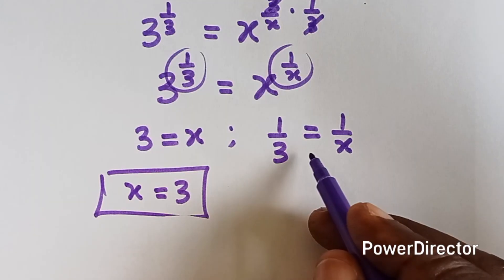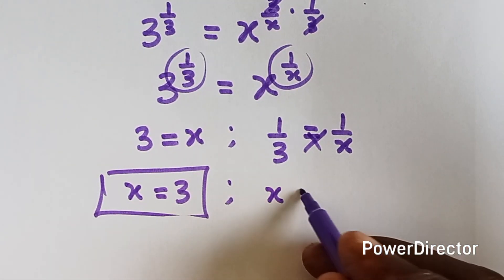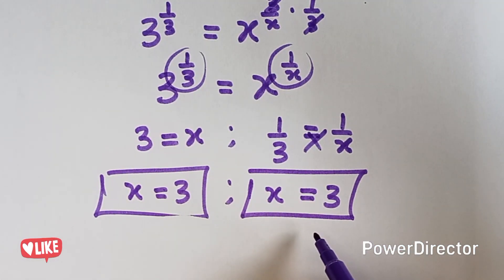So let's confirm that from the other equation. We cross multiply, we have x times 1 gives us x. 3 times 1 gives us 3. So that means that x is also 3 here.